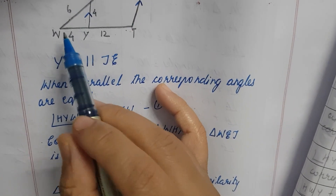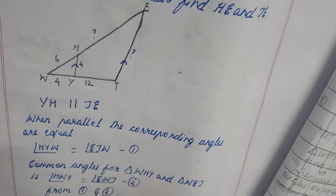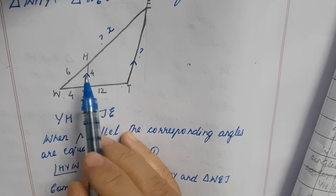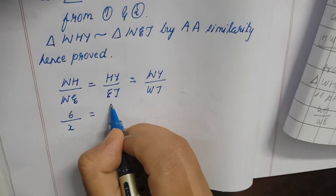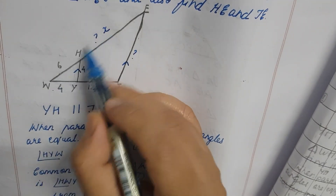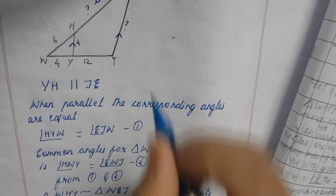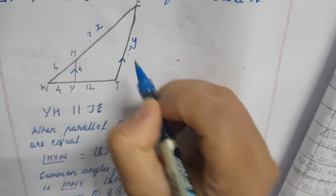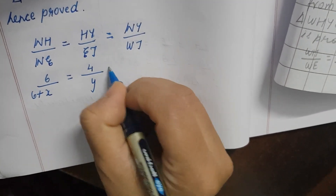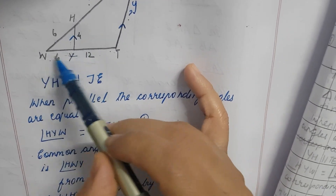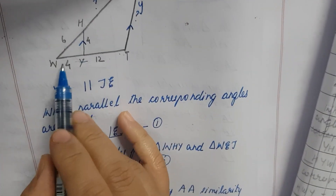Now substituting the known values: WH is 6, WE is X, HY is 4, ET is Y, WY is 4, and WT is 4 plus 12 which equals 16. So we get 6 divided by 6 plus X, equals 4 divided by Y, equals 4 divided by 16, which simplifies to 1 divided by 4.